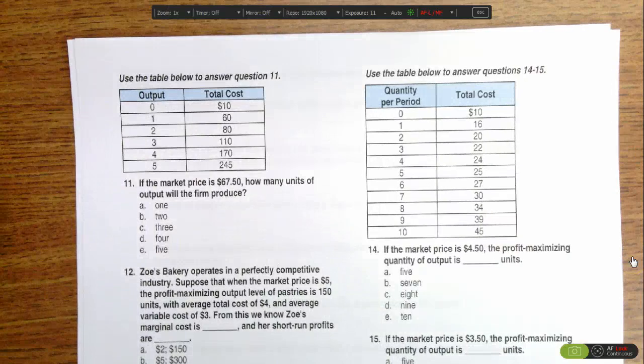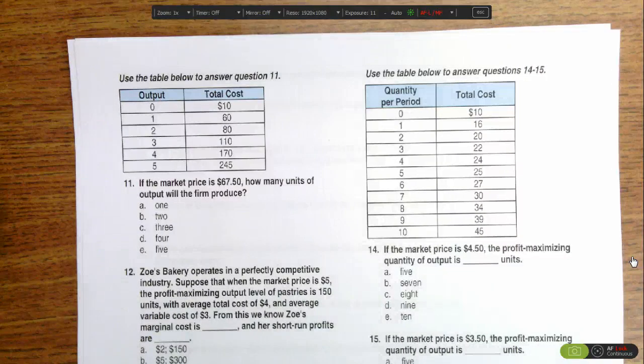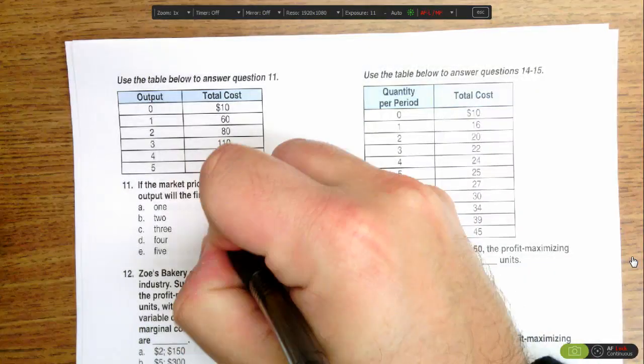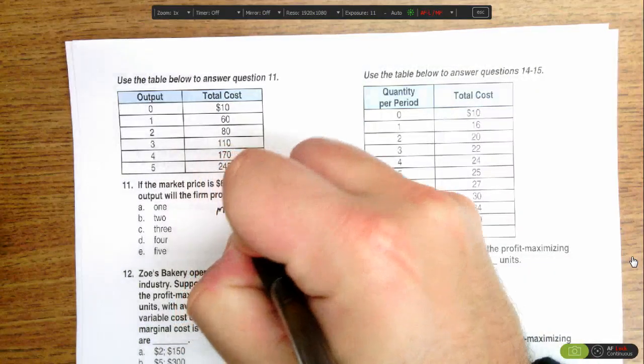This question is asking us to identify how much output should the firm produce, assuming the price is $67.50. To figure it out, we need to remember the optimal output rule, which is where marginal revenue equals marginal cost.